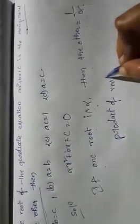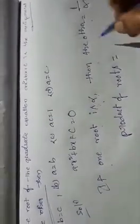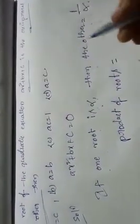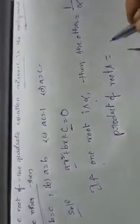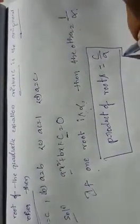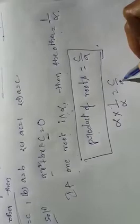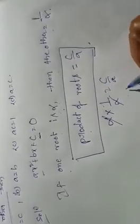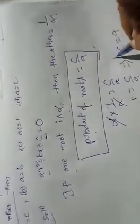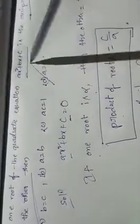We know the product of roots equals c by a. So the product is alpha into one by alpha, which equals c by a. Alpha cancels, giving one equals c by a, so c equals a. Looking at the options, a equal to c means option D is correct.